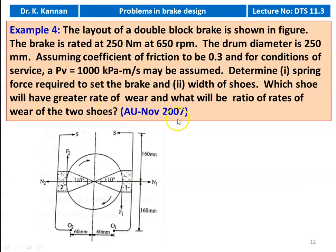Example number 4, from the November 2007 question paper. Here the layout of a double block brake is shown in the figure. The brake is rated at 250 Newton meter at 650 RPM. The drum diameter is 250 millimeter assuming coefficient of friction to be 0.3. For conditions of service, PV = 1000 kilopascal meter per second. Determine the spring force required to set the brake, width of the shoes, which shoe will have greater rate of wear, and the ratio of rates of wear of the two shoes.